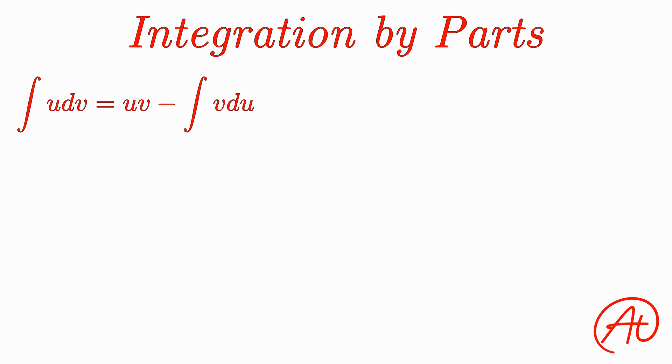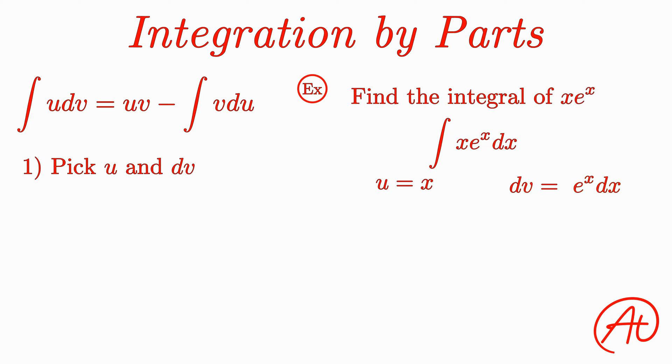With the general concept covered, let's now see how we can actually use it. And since this process is sometimes a little confusing, let's do an example alongside the explanation. Let's say we want to find the integral of x times e to the x, which written as an actual integral looks like this. Alright, so our first step is to pick what our u and dv are in the integral we can't figure out. For this example, let's pick u to be x and then our dv becomes everything else, e to the x dx.